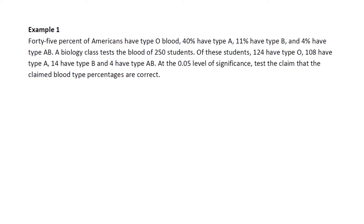Example 1: 45% of Americans have type O blood, 40% have type A, 11% have type B, and 4% have type AB. A biology class tests the blood of 250 students. Of these students, 124 have type O, 108 have type A, 14 have type B, and 4 have type AB. At the 0.05 level of significance, test the claim that the claimed blood type percentages are correct.